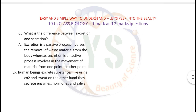Which scientist observed the secretions of fruits? Bruggemann. What is the difference between excretion and secretion? Excretion is a passive process involved in the removal of waste material from the body, whereas secretion is an active process involved in the movement of material from one point to another, e.g., human beings excrete substances like urine, carbon dioxide, and sweat, whereas they secrete enzymes, hormones, and saliva.